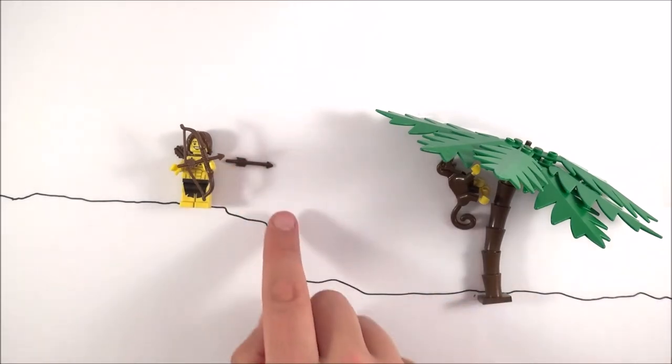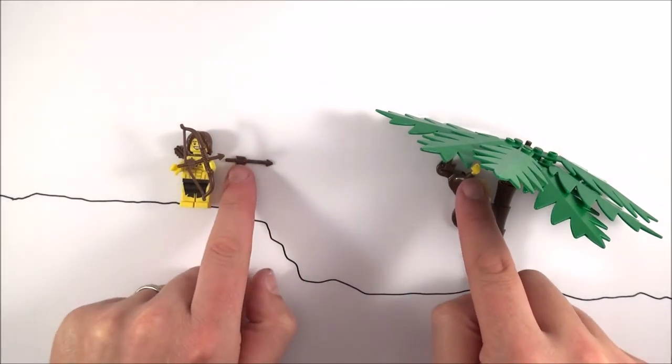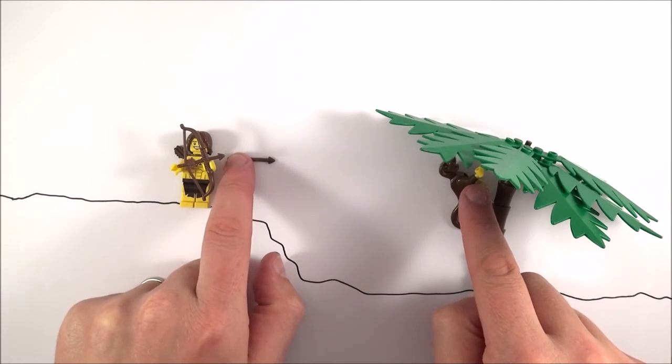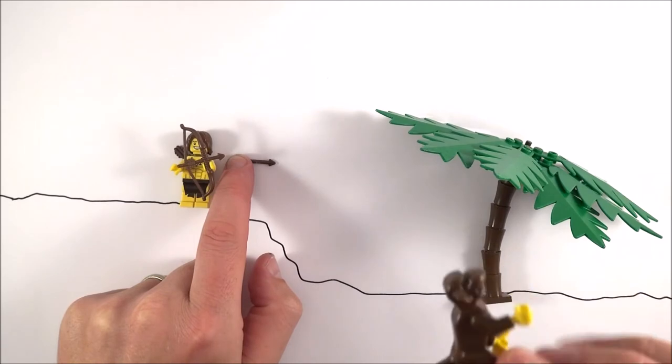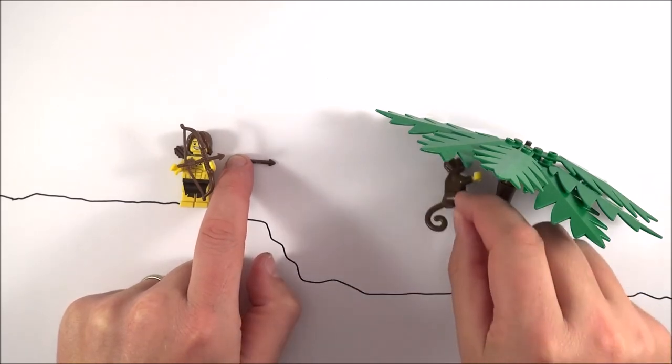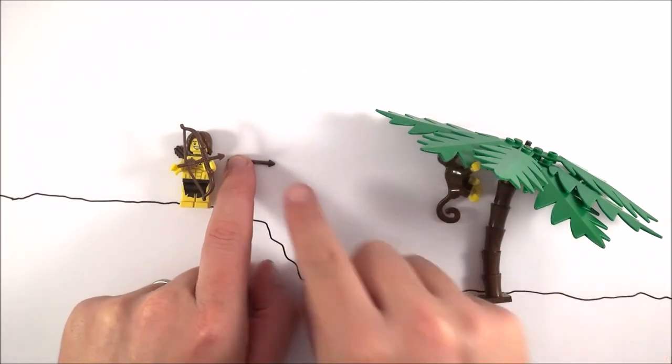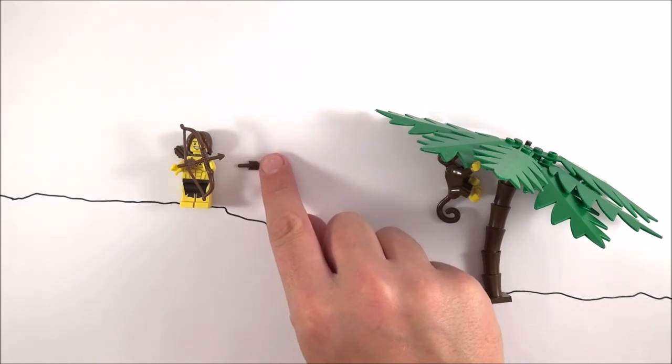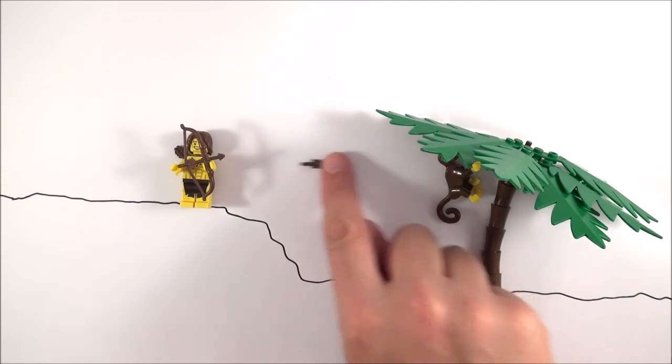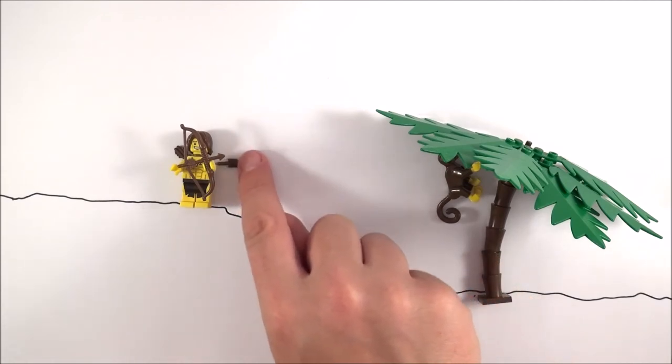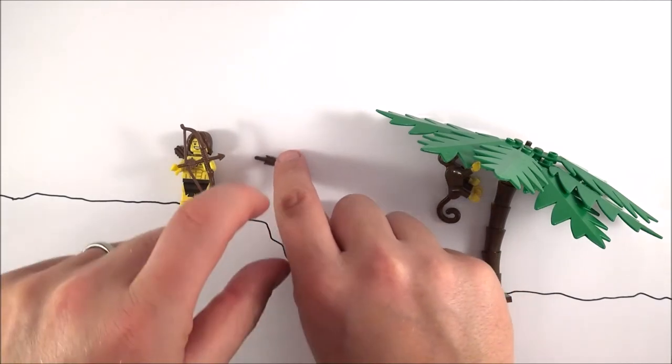Now the reason for this is that as soon as the arrow leaves the bow, the monkey's going to start dropping to the ground and this is going to have an acceleration of 9.81 meters per second per second. The arrow is also going to start dropping to the ground at 9.81 meters per second per second.